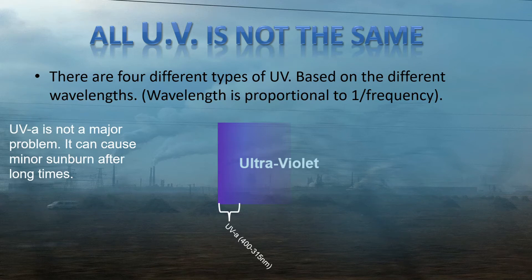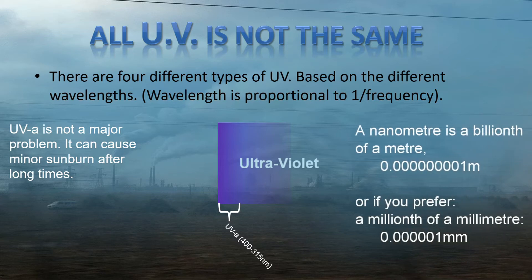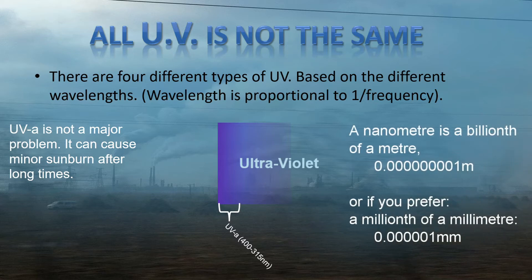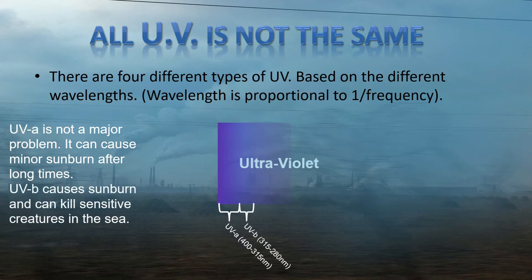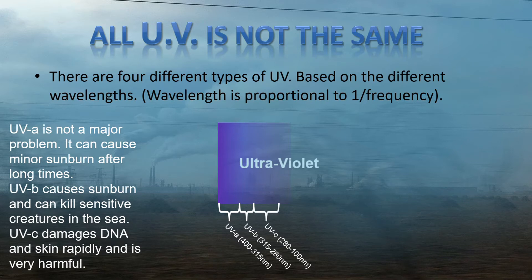UVA is not a major problem. It can cause minor sunburn after long times, but it is not something that we worry about. UVA is closest to visible light, at 400 to 315 nanometers — a nanometer is a billionth of a meter, or a millionth of a millimeter. UVB causes sunburn and can kill sensitive creatures in the sea if they are not protected. UVB light is 315 to 280 nanometers. And UVC damages DNA very quickly and is very harmful. UVC is 280 to 100 nanometers.